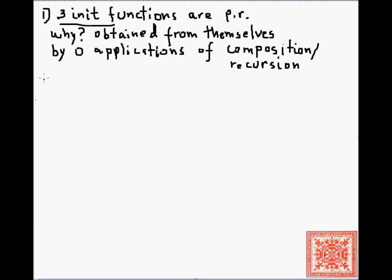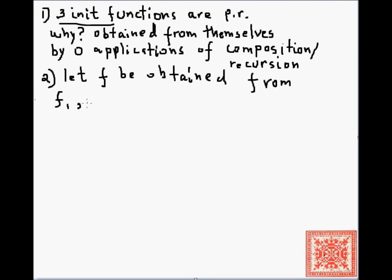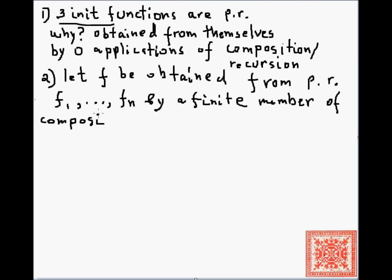Now, let's assume that we have some function f that is obtained from a finite sequence of primitive recursive functions by composition or recursion — a finite number of applications. By a finite number of compositions and recursions, f must be primitive recursive. Why? Because every function in that sequence — remember our constructive interpretation of the definition of a primitive recursive function — each function in that sequence is either an initial function or a primitive recursive function.